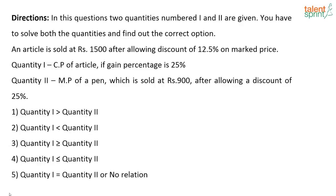Try this one and tell me what the answer will be. Given: an article is sold at rupees 1500 after allowing a discount of 25% on the marked price. Quantity one asks for the cost price of the article if the gain is 25%. So, the selling price is 1500 and the net gain percentage is 25%.